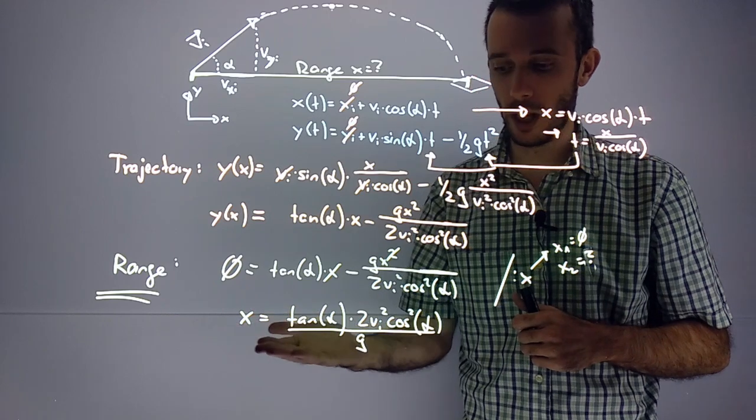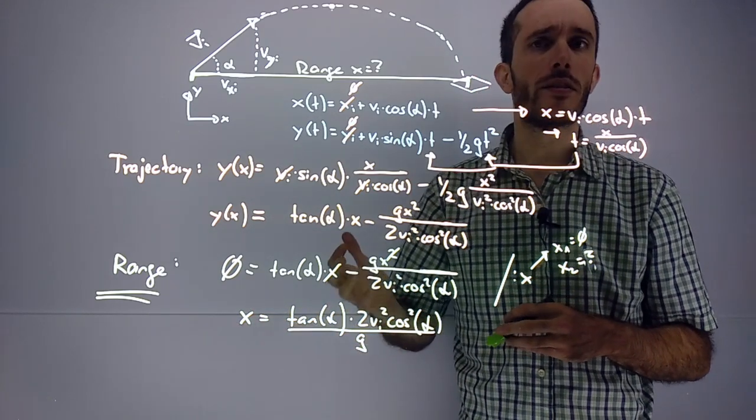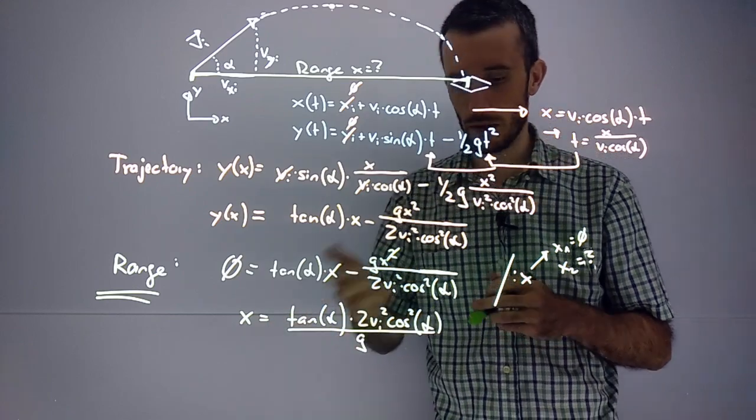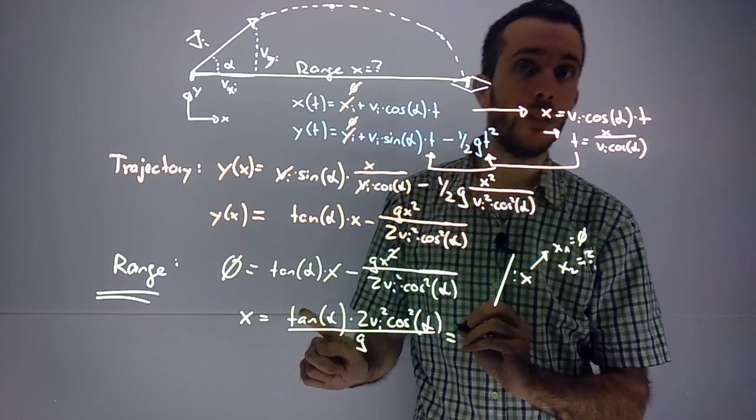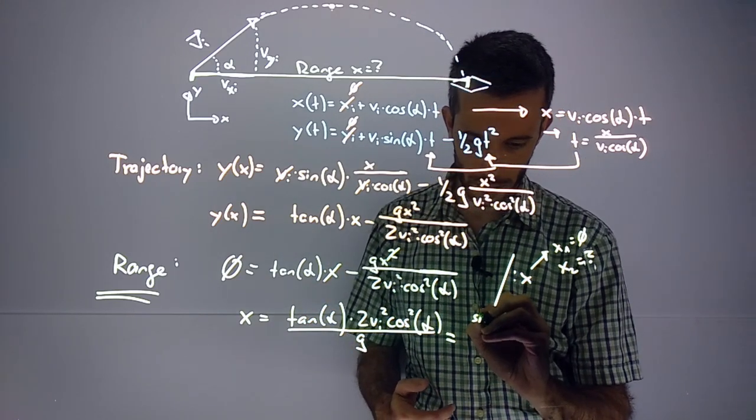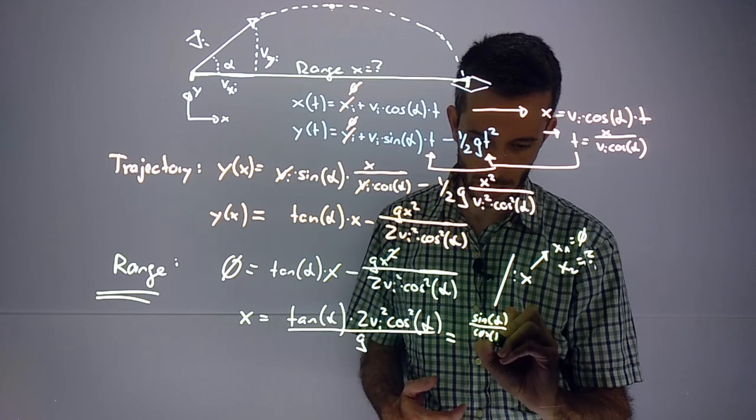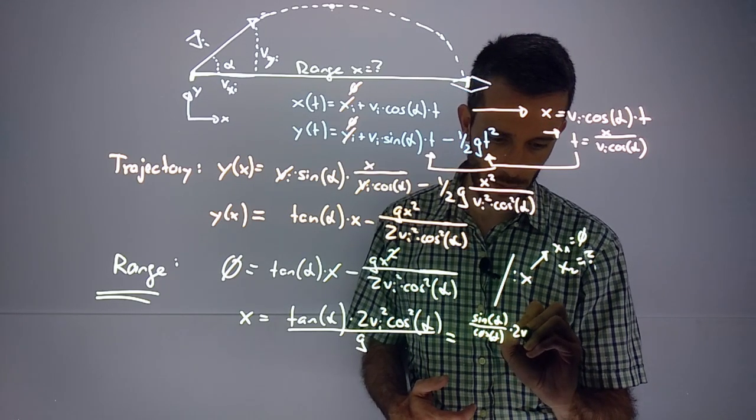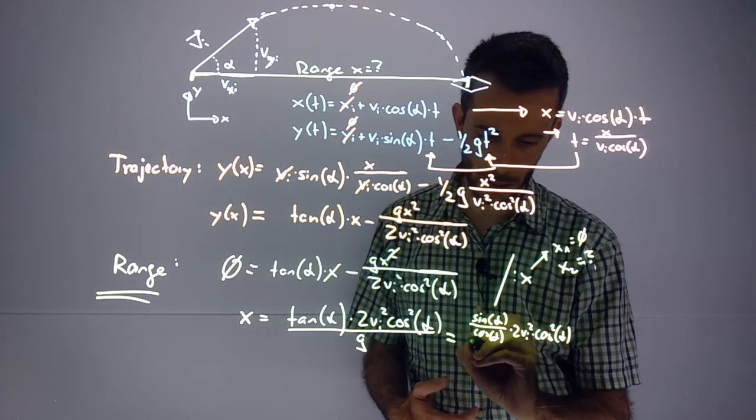So this already is my range equation; however, it looks a bit ugly, so let me simplify this using trigonometric equivalences. Now first of all, tan can be rewritten as sin over cos. So sin over cos times 2 times v_initial² times cos²(α). Why did I just do that? Because now one cosine cancels out.